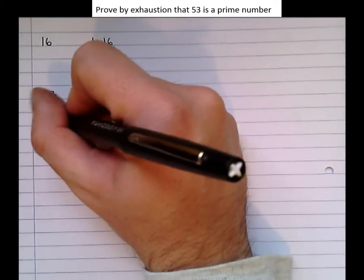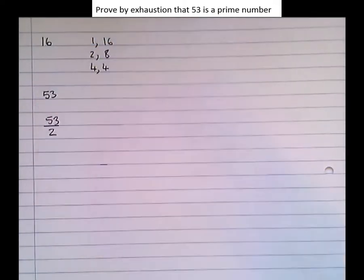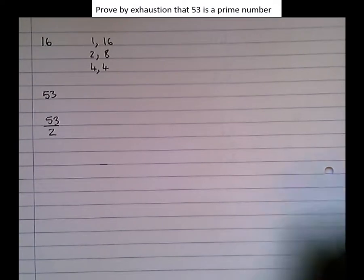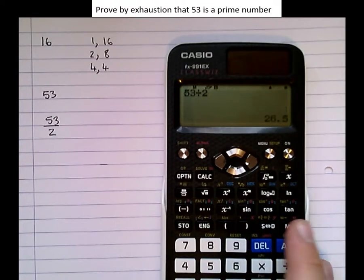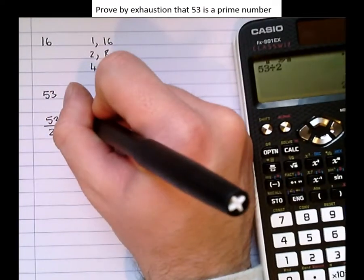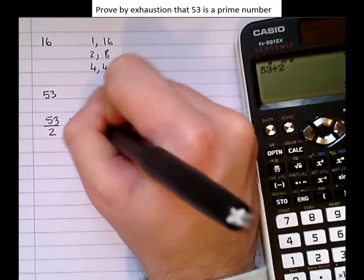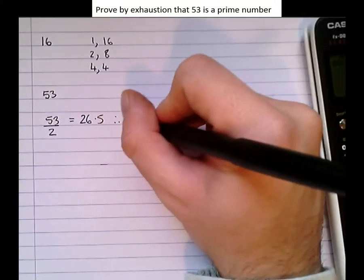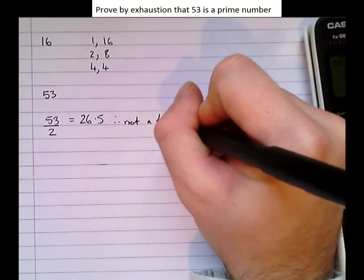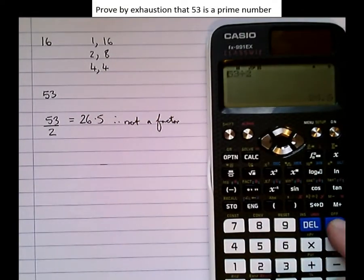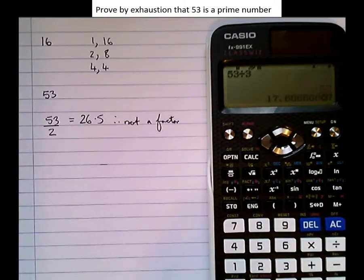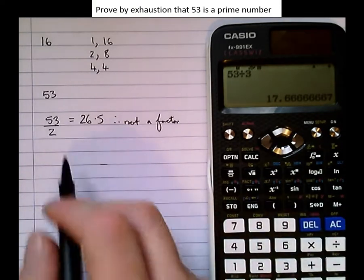53 divided by 2, let's do that on the calculator: 26.5, which isn't an integer. 53 divided by 3 is 17.7, also not a factor.